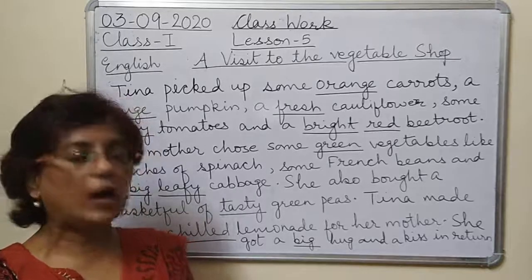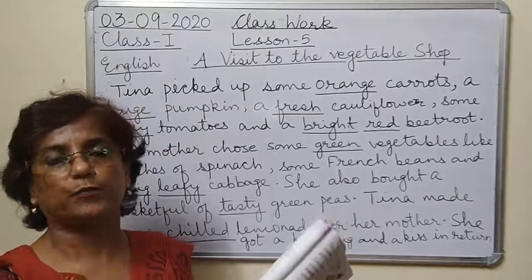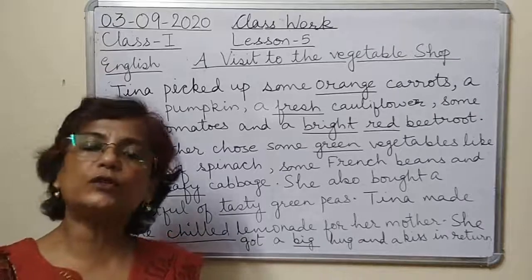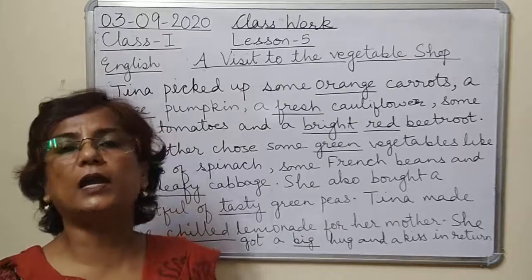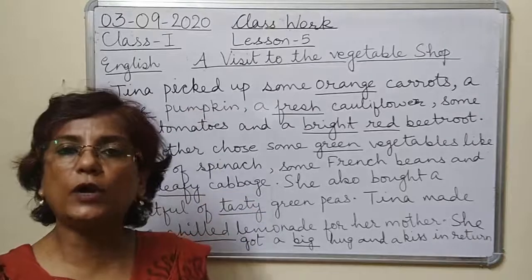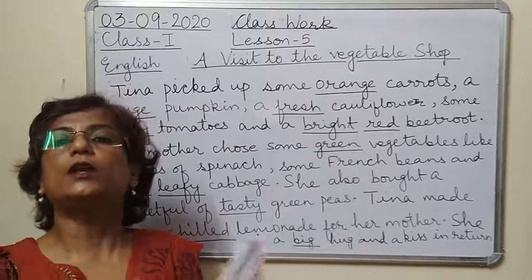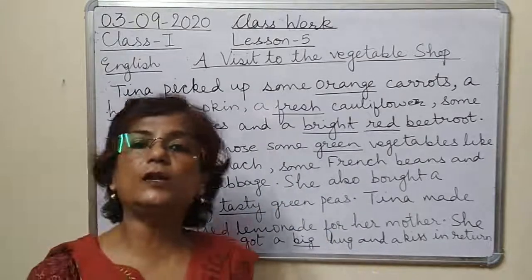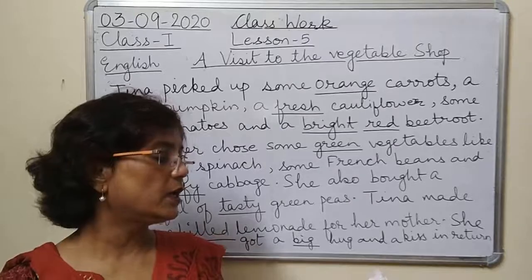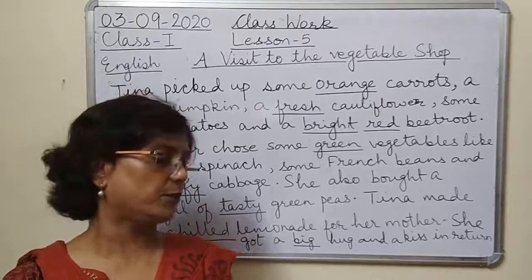For example, 'bright morning' — how was the morning? The morning was very bright. The shop was neat and clean — how was the shop? The shop was neat and clean. Tina picked up some orange carrots — how were the carrots? Carrots were orange in color. How was the pumpkin? It was huge. How was the cauliflower? Absolutely fresh. How were the tomatoes? They were juicy. How was the beetroot? It was bright red in color.